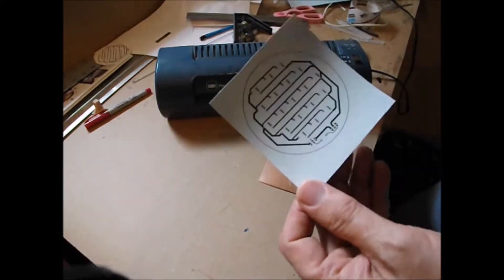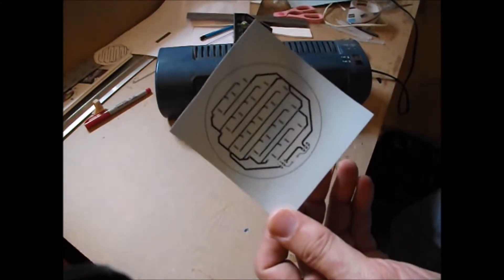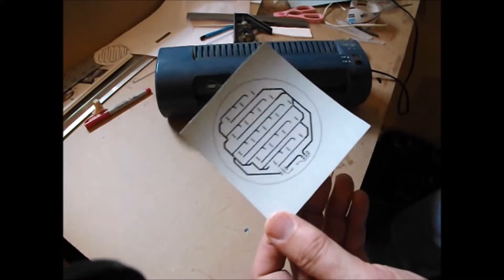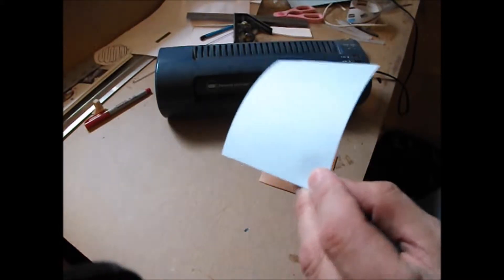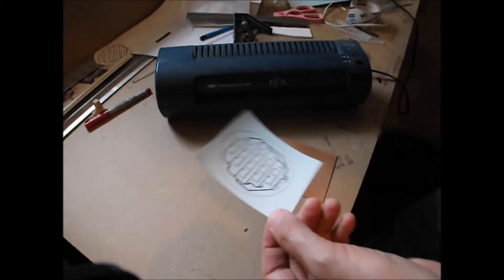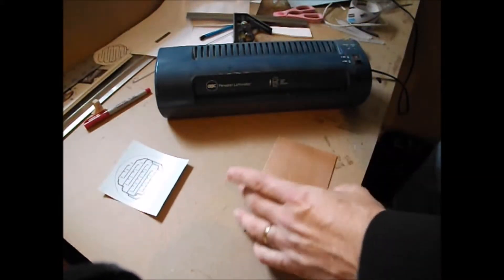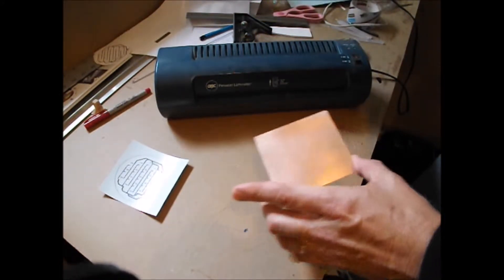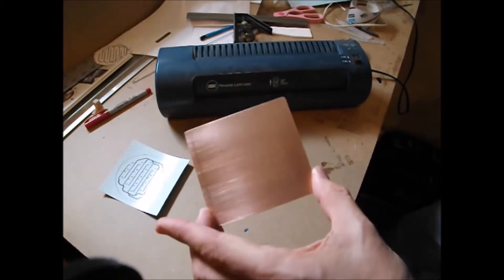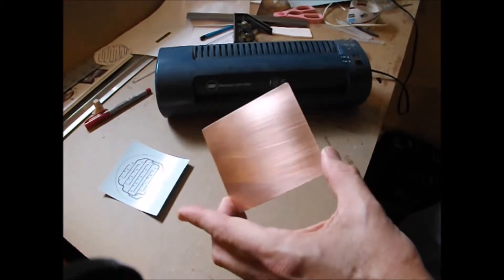So I got my board layout printed on my transfer paper. Again, it's printed on the shiny light blue side, not the darker blue matte side. And I got a nice clean piece of copper clad that I'm going to put this circuit on.